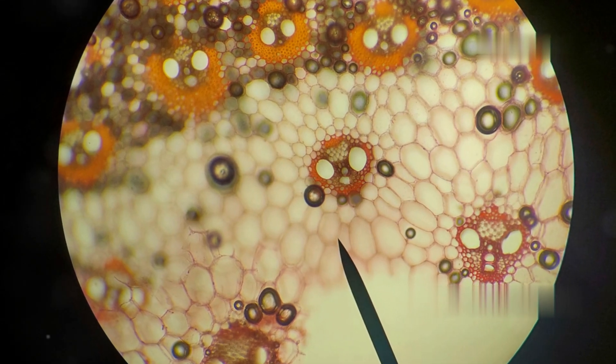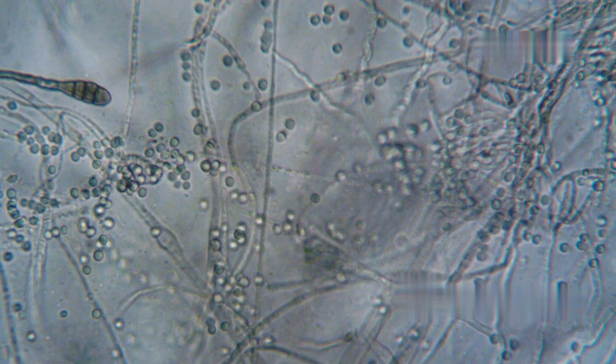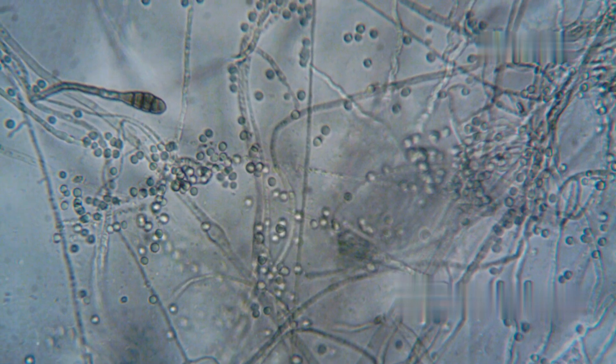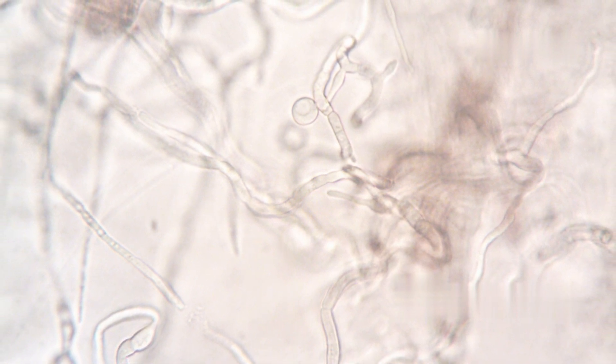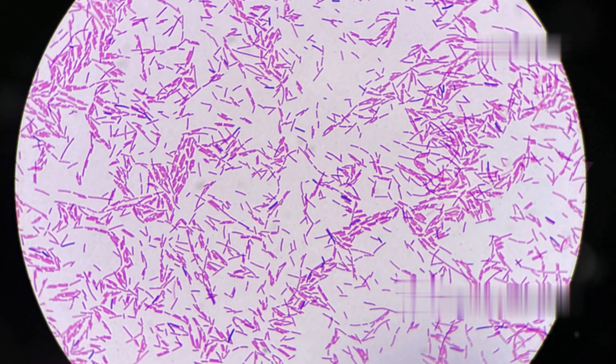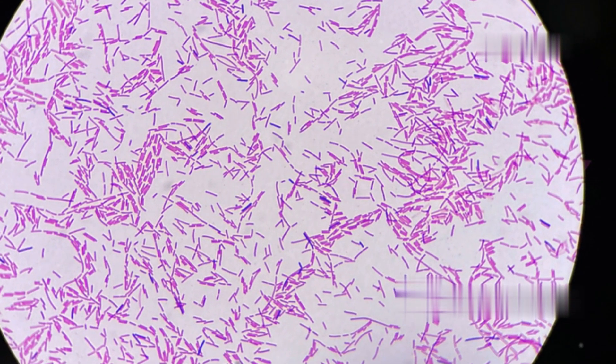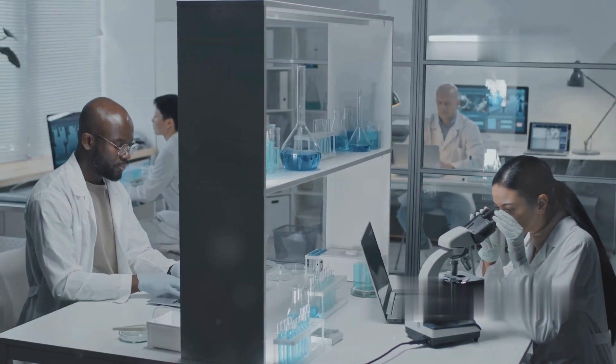With electron microscopy, scientists could peer into the intricate machinery of cells, revealing complex structures. They could observe the detailed architecture of cellular components, such as organelles, proteins, and even individual molecules. This has provided invaluable insights into the inner workings of living organisms. It has revolutionized fields like biology, materials science, and nanotechnology.